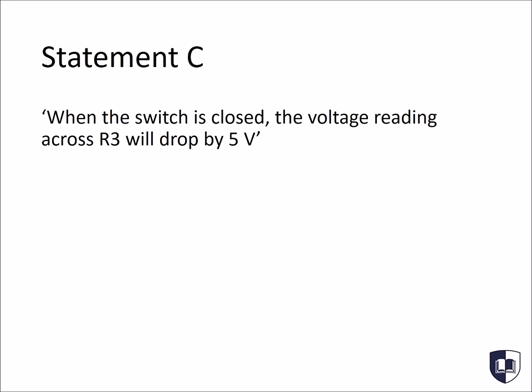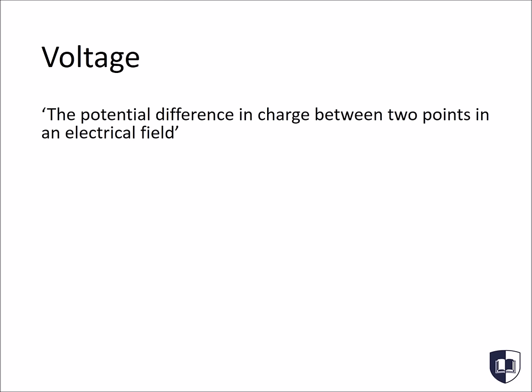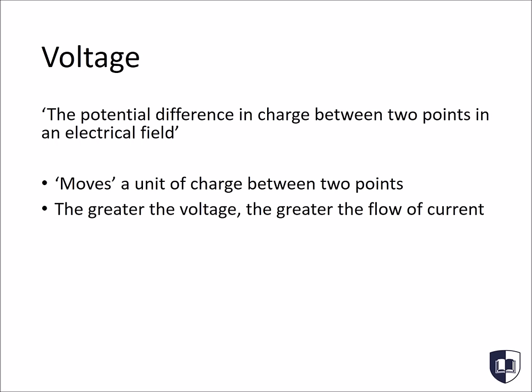Let's start by looking at statement C. When the switch is closed, the voltage reading across R3 will drop by 5 volts. So, what is voltage and how does voltage relate to electrical circuits? Voltage can be defined as the potential difference in charge between two points in an electrical field. Basically, it is the potential difference in energy which moves a charge between two points within a circuit. So, the greater this potential difference, or voltage, the greater the flow of charge or current will be.